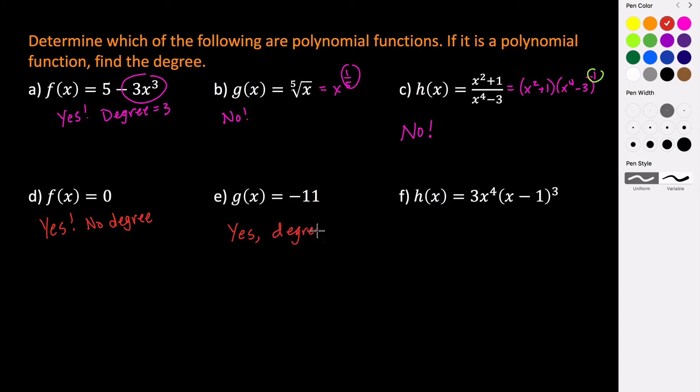And the reason why is we can think of this negative 11 as negative 11 times x to the zero power. Because if you recall, x to the zero power, that whole thing is actually just equal to 1 for any value of x that is not zero.